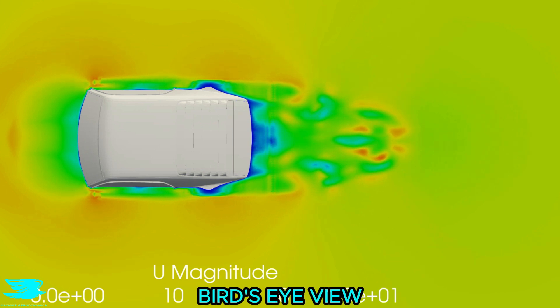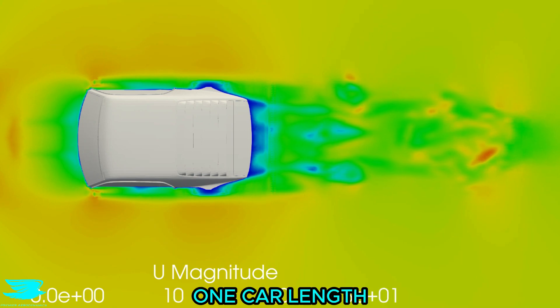This plane is a bird's eye view cutting just over the trunk. The wake is on the larger side and extends about one car length downstream.